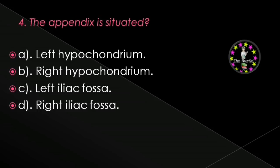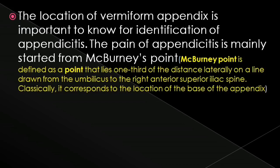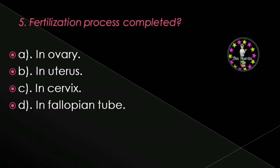Next question: The appendix is situated in — left hypochondrium, right hypochondrium, left iliac fossa, or right iliac fossa? Correct answer is right iliac fossa. The location of the vermiform appendix is important for identification of appendicitis. The pain of appendicitis mainly starts from McBurney's point, defined as a point lying one-third of the distance laterally on a line drawn from the umbilicus to the right anterior superior iliac spine, corresponding to the base of the appendix.